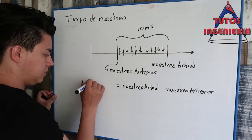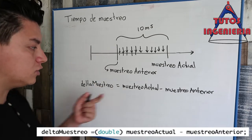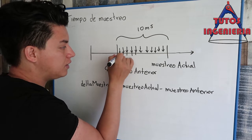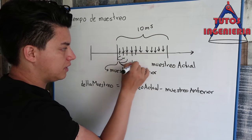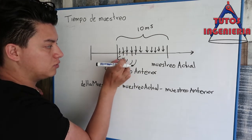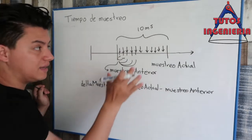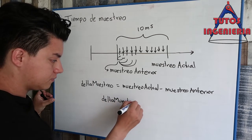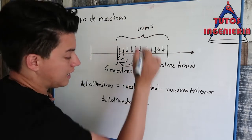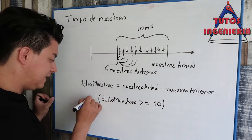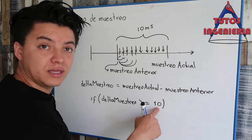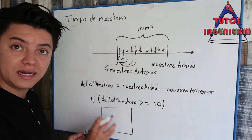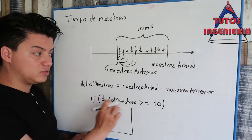We want the difference between 'muestreo actual' and 'muestreo anterior'. That difference creates a new variable called 'delta muestreo'. The 'delta muestreo' is the difference between those variables. The reason we create it is that 'muestreo anterior' is a fixed static variable while 'muestreo actual' is changing as the Arduino runs. That changing means that if 'delta muestreo' is equal to or higher than 10 milliseconds, then the sample time we want to achieve is reached, and we can execute the control signal.